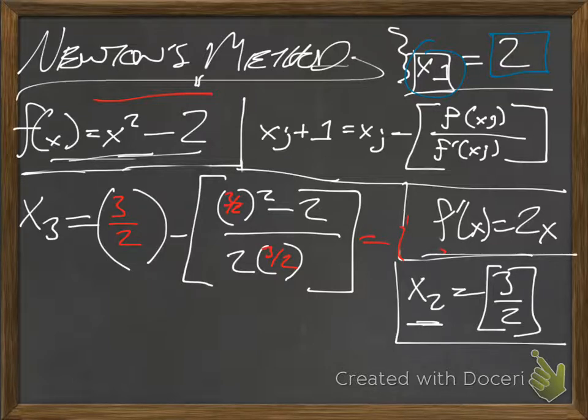So, I would just recommend plugging it into a scientific calculator. So, I'm going to do that just to save us some work here. If you've made it to calculus, we probably don't need help figuring out how to subtract and add fractions here. So, I'm putting in 3/2 minus (3/2)² - 2 over the bottom, 2 times 3/2. So, we're going to come up with 17/12.